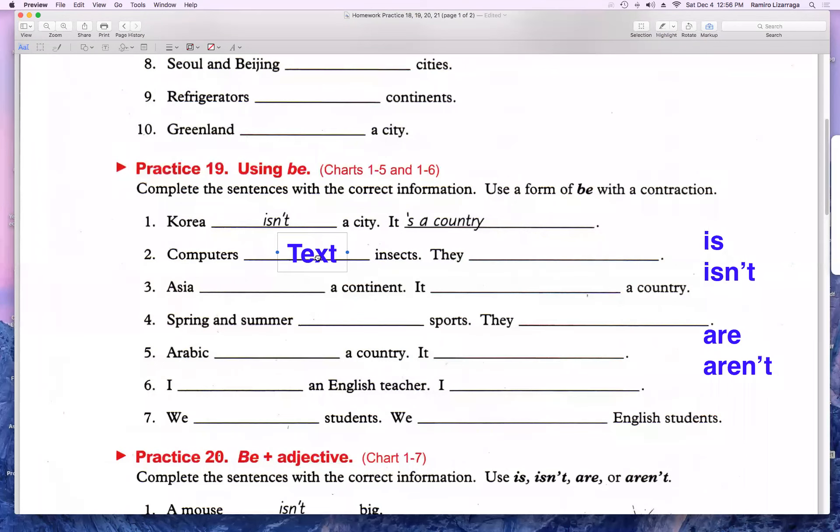Las computadoras son insectos. Bueno, pues si yo escribo el 'are', computers are insects, pues yo voy a estar diciendo que algo está mal, ¿verdad? Porque las computadoras no son insectos. Entonces yo tengo que negar, yo tengo que decir computers aren't, computers aren't insects, no son insectos.